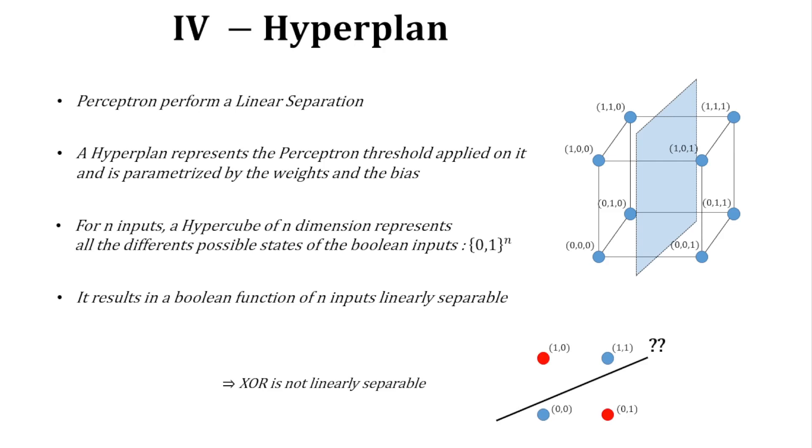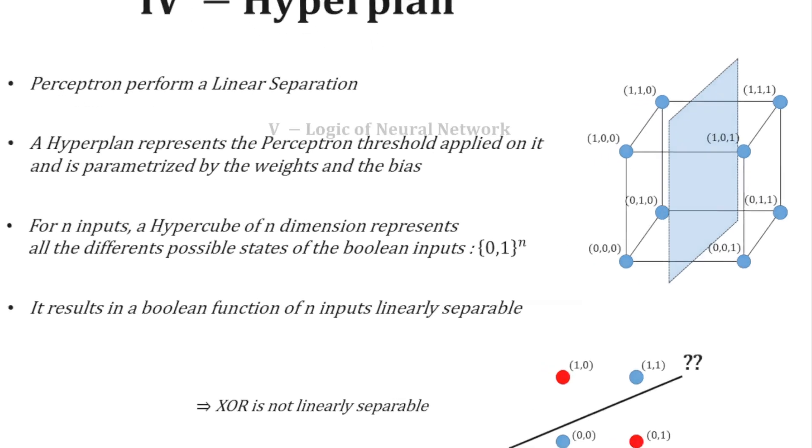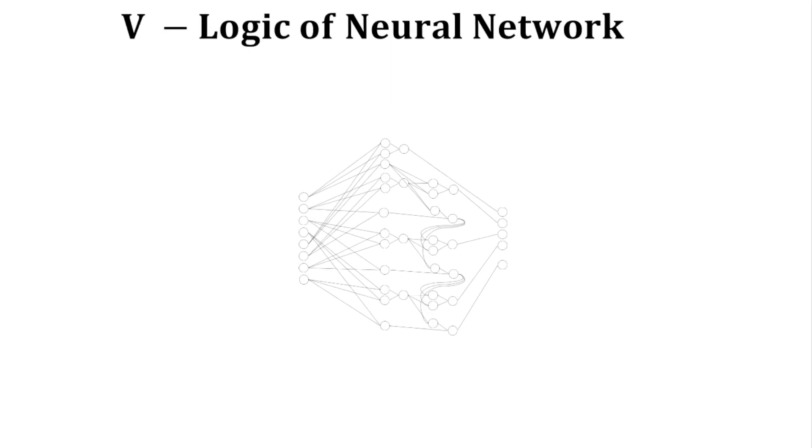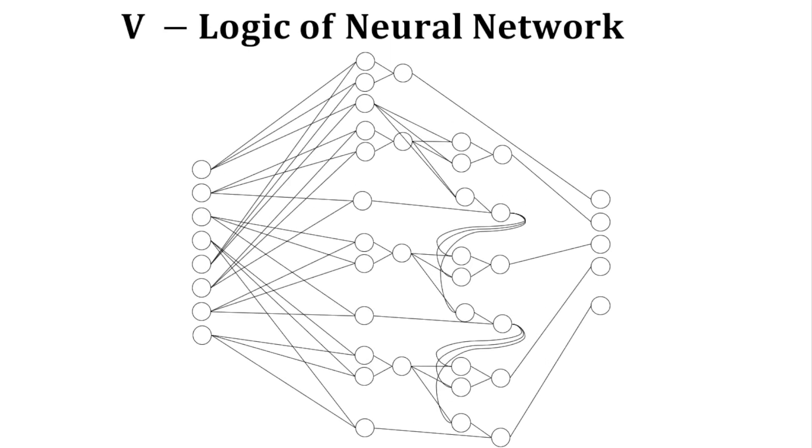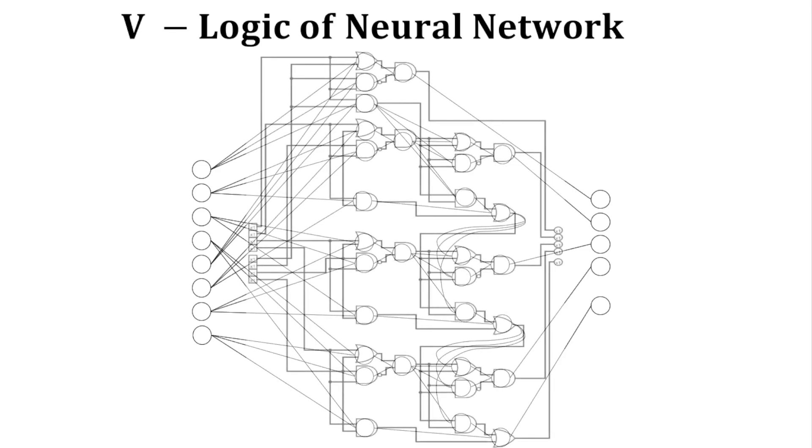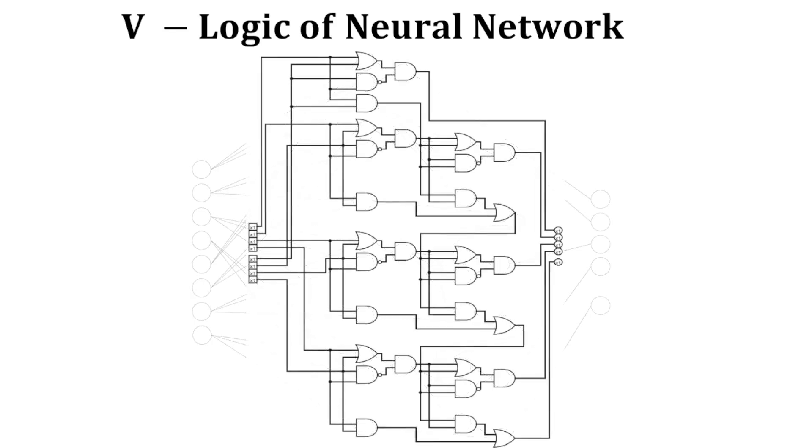Now that we have explored the equivalence between perceptrons and logical gates, let's explore what a logical neural network is equivalent to. We saw that logical perceptrons are equivalent to logical gates, and neural networks are a sequence of perceptrons connected to each other. So logical neural networks are a sequence of logical gates connected to each other. In other words, this is a digital circuit.